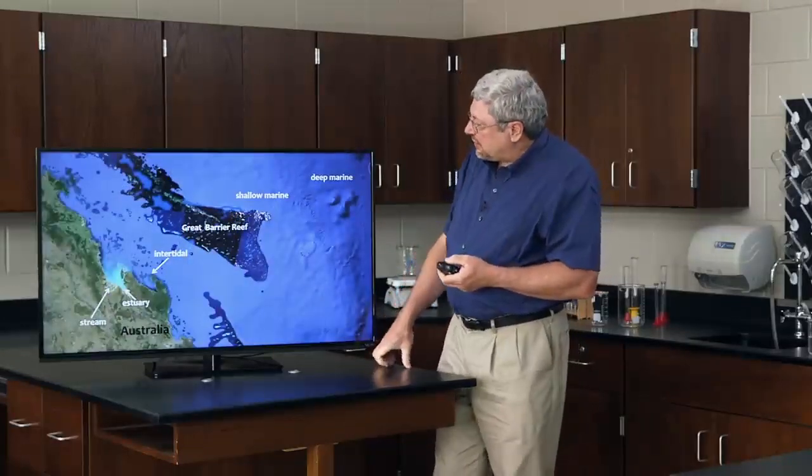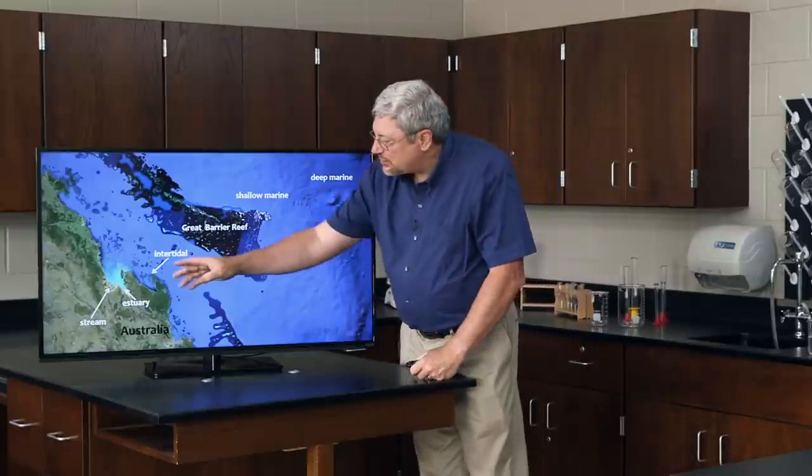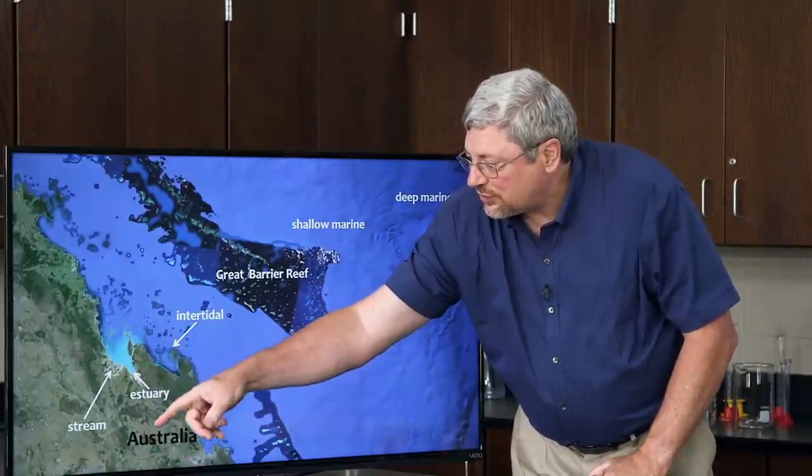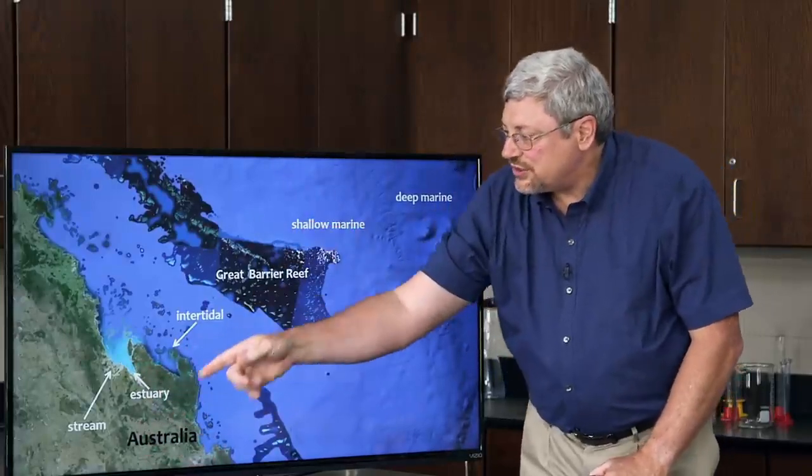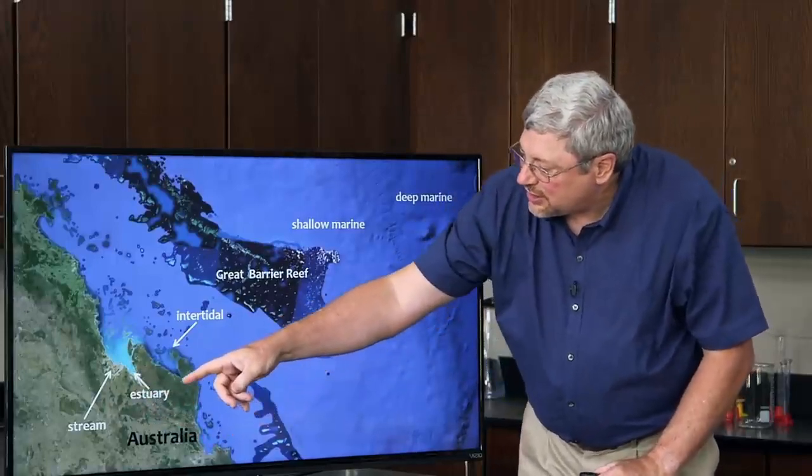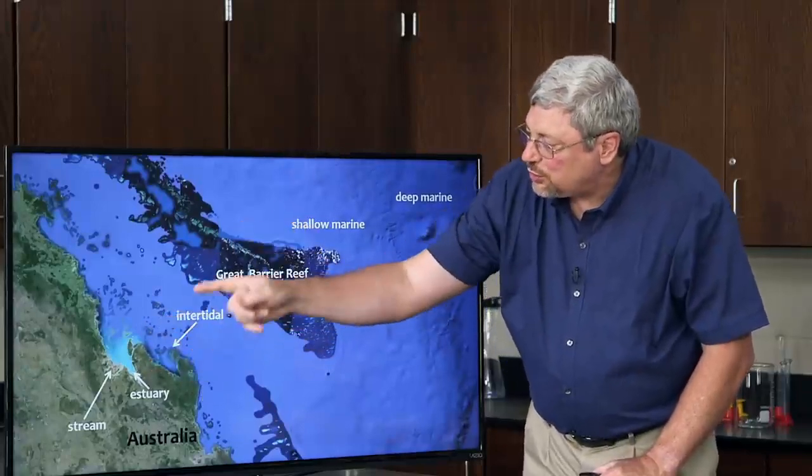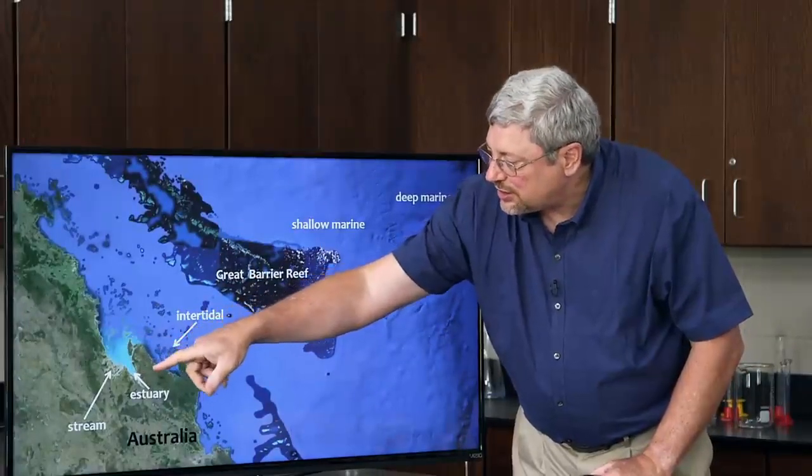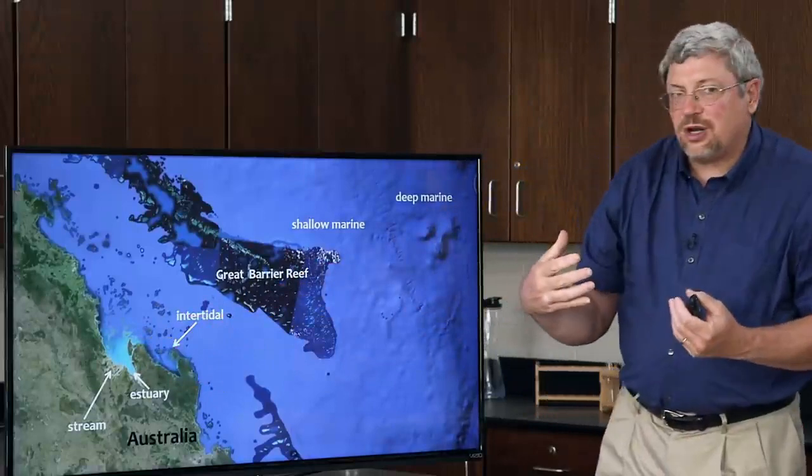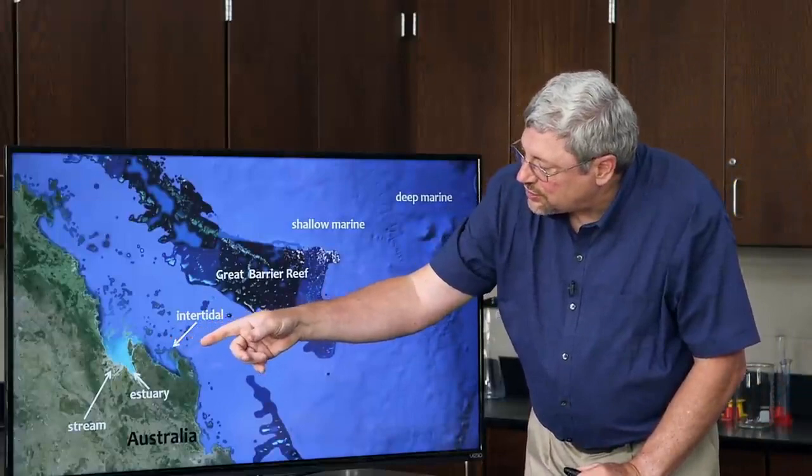Here we have a satellite photo showing several of the biomes that we've just talked about, the water biomes. Starting on the land of Australia here, we can see some of the streams that are flowing towards the ocean as kind of lines. Maybe you can't see them at all where you're at. And then in the place where the stream water mixes with the ocean water, showing up as a bluish color here, these are the estuaries where fresh and salt water are being mixed.